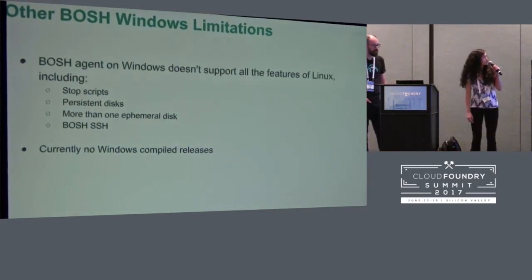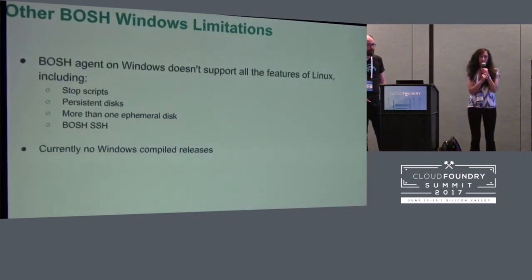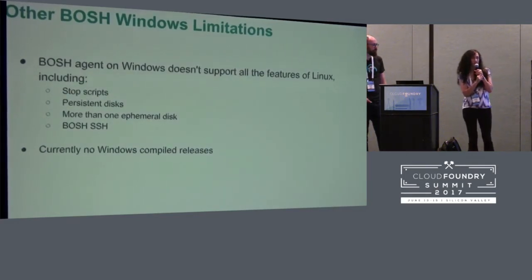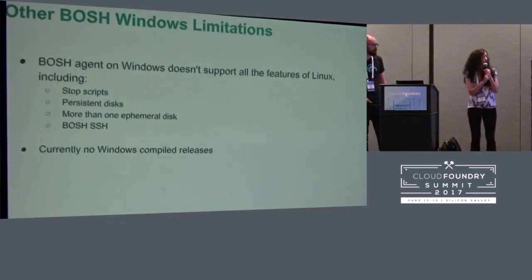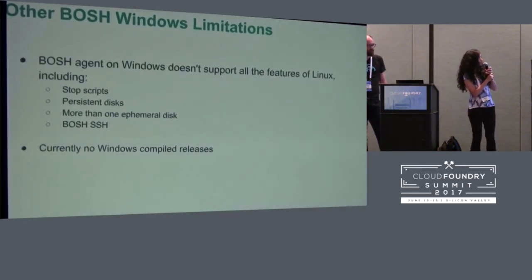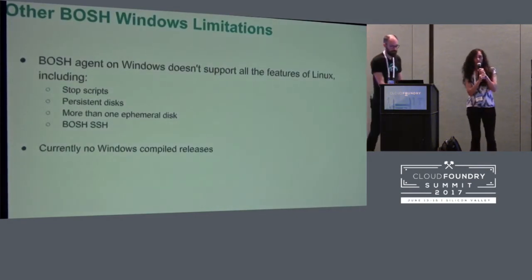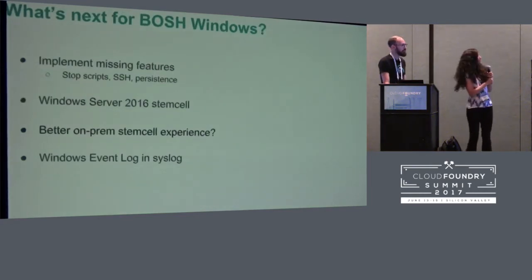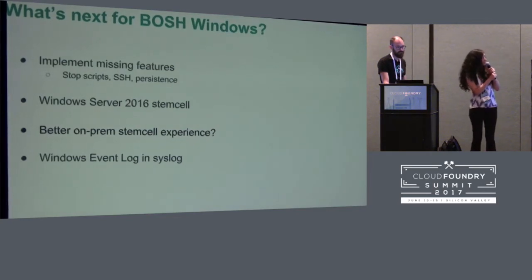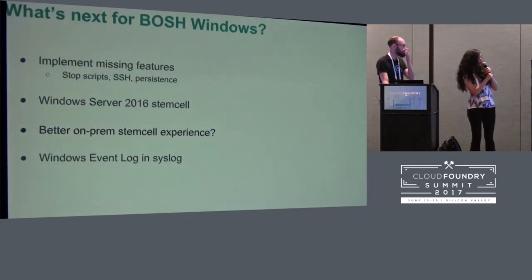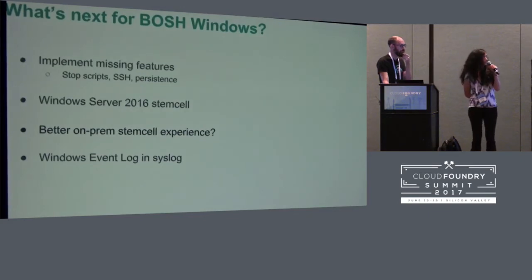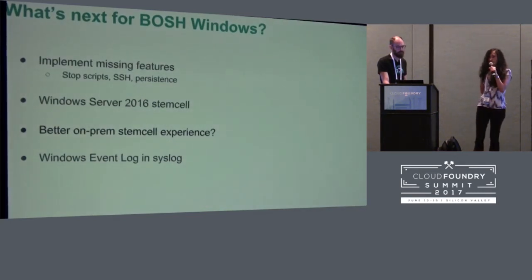We still have some limitations of the BOSH agent on Windows compared to Linux. We don't currently support all features supported on Linux — that includes stop scripts, persistent disks, more than one ephemeral disk, and BOSH SSH. We're working on that. We also don't currently have compiled releases for Windows. What's next for our team: we're working on implementing the missing features. Stop scripts should be ready very soon. We're working on building a stemcell for Windows Server 2016. We're hoping to share a strategy for a better on-prem stemcell experience, and we're looking to forward the Windows event log to our syslog endpoint, which should make debugging easier.